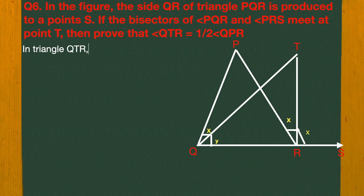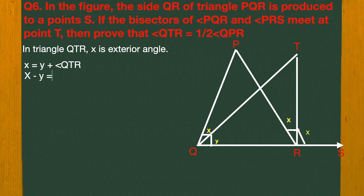We will write in triangle QTR. In triangle QTR, angle X is an exterior angle. Since the sum of interior angles equals the exterior angle, we write: X equals Y plus angle QTR.